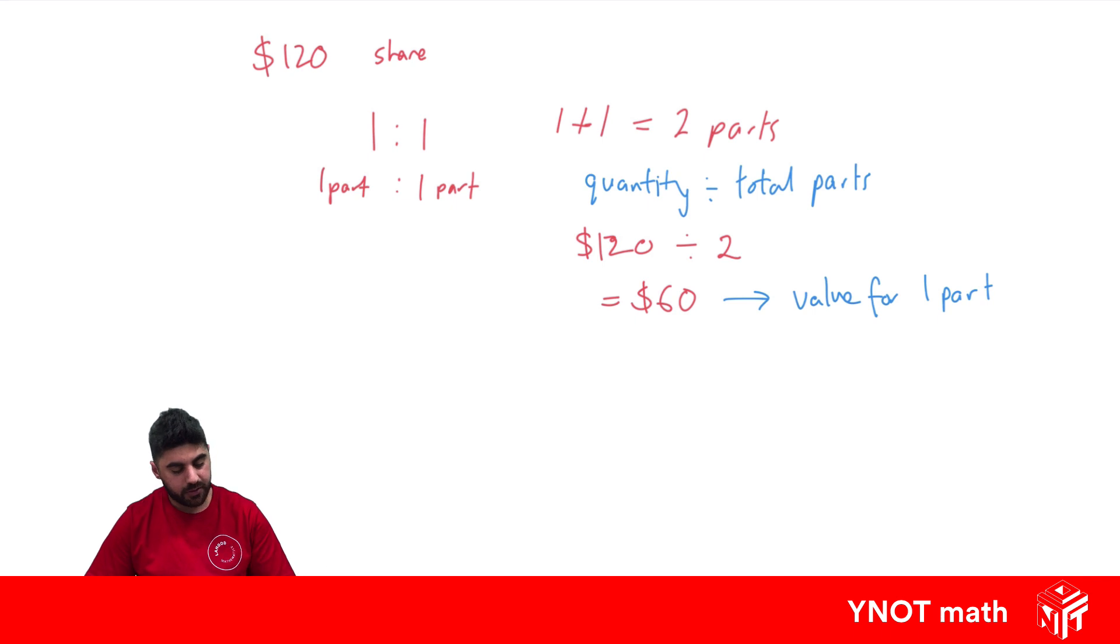And looking back at the question, we want to give 1 part to 1 part. We know 1 part is $60, which means that you and your friend would each get $60 each. And to know if you've done it correctly, it should add up to the starting quantity. So $60 plus $60 is $120, so we've done it correctly.